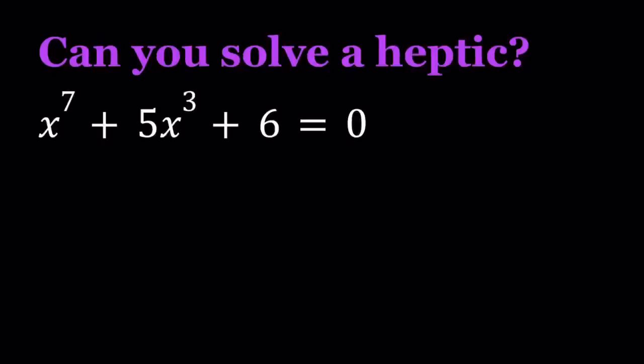Hello everyone, in this video we're going to be solving a heptic equation. It's also called a septic equation, but this time I wanted to call it a heptic equation. So we have an equation that is of 7th degree: x to the 7th power plus 5 times x to the 3rd power plus 6 is equal to 0. And we're going to be solving for x values.